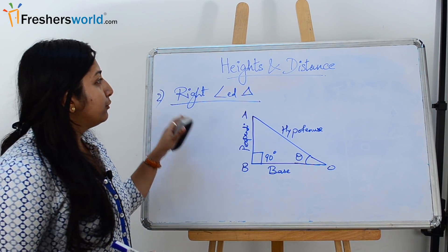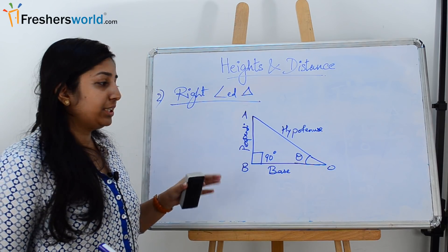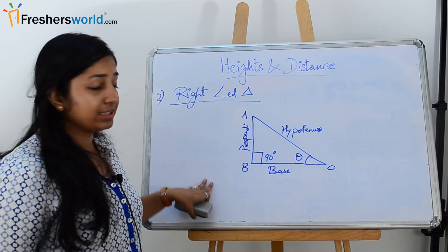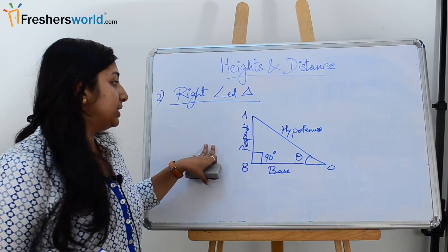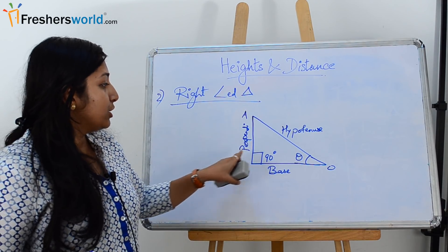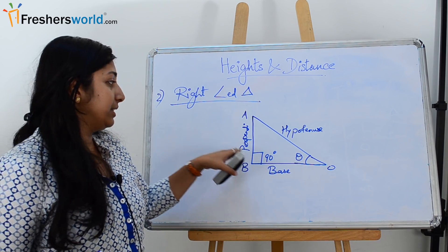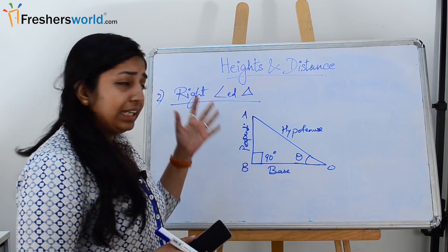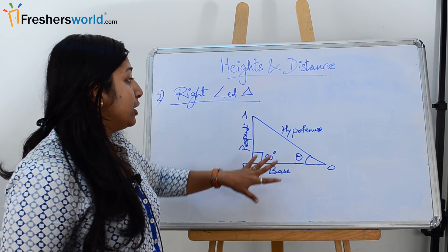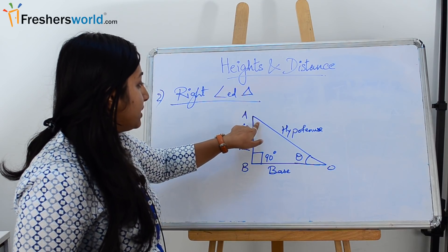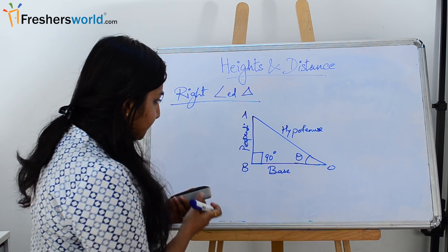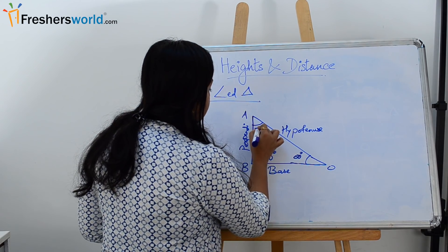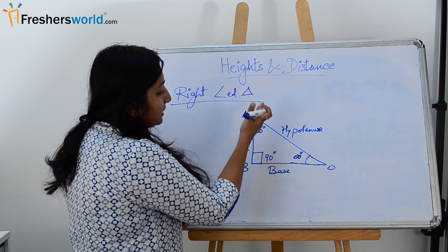Our next term is the right angle triangle. For any problem in height and distance, the right angle triangle concept is very important, because whenever you draw a diagram out of a problem it will always end up as a right angle triangle. In a right angle triangle, one of the angles will always be 90 degrees. Also, in any triangle the sum of all three angles is 180 degrees, so in a right angle triangle these three angles would also sum to 180 degrees.